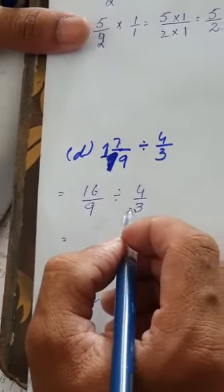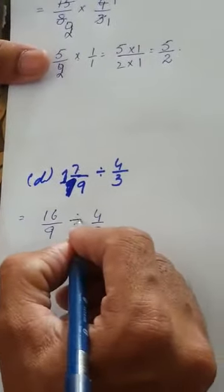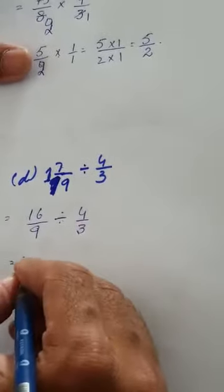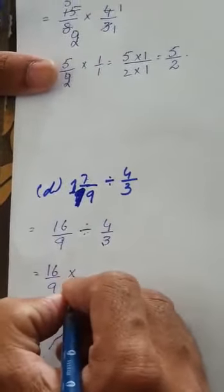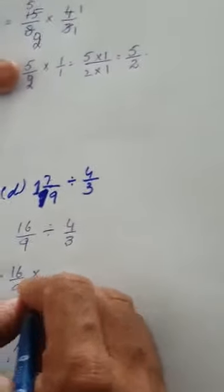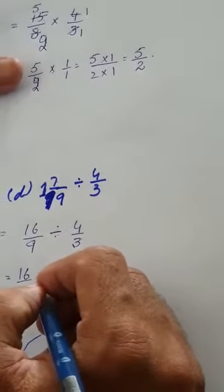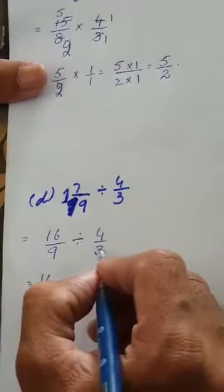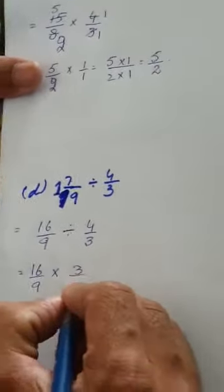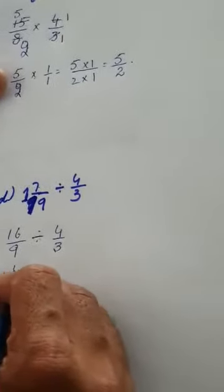When there is a symbol of division, first of all we need to convert it into multiplication. It is a rule: when you replace the division symbol with multiplication, you must reciprocate the last fraction. So 4 over 3 becomes 3 over 4. After this we cancel: 4 fours are 16, and 3 threes are 9.